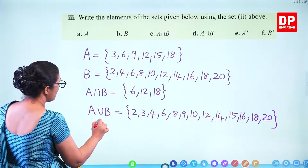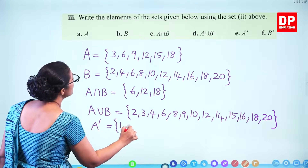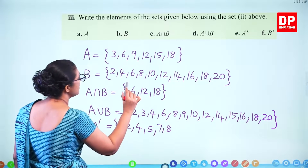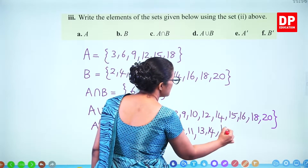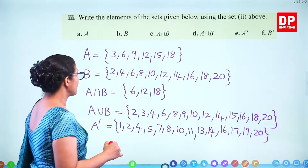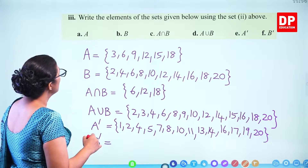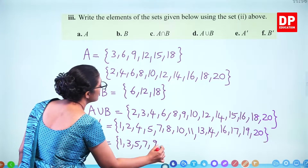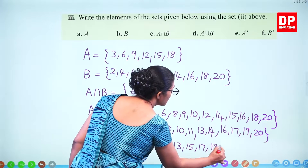A dash is everything outside A — you can't write 3, 6, 9 up to 18. So write all the other numbers: 1, 2, 4, 5, 7, 8, 10, 11, 13, 14, 16, 17, 19, 20. B dash is everything outside B — all odd numbers: 1, 3, 5, 7, 9, 11, 13, 15, 17, 19.